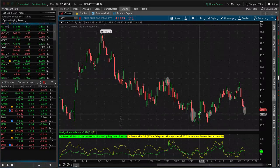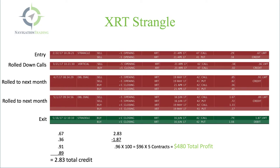Let's go back to the slides and take a look at what all that meant from a profit standpoint. Here's how we break it down. I copied the exact trade tickets onto the slide here, so you can see what our entry was on 2/22. We sold this for 67 cents. As you can see, we sold five contracts. Then on 3/21, as I mentioned, it moved down, so we had to roll down the calls. We bought back our 47 calls and we rolled those down to the 42. Now we're holding a 41 put and a 42 call.